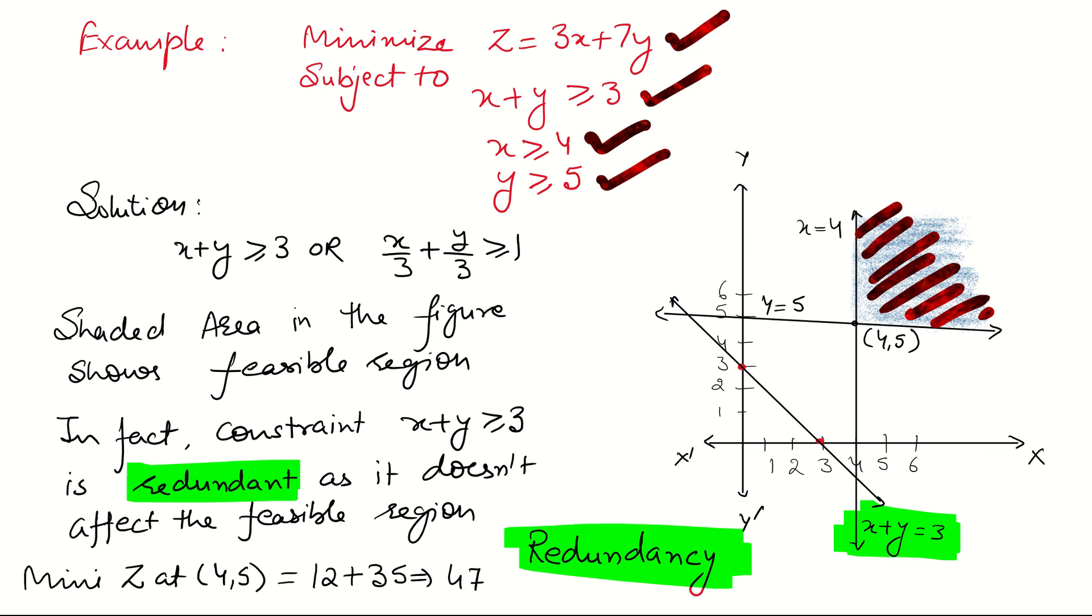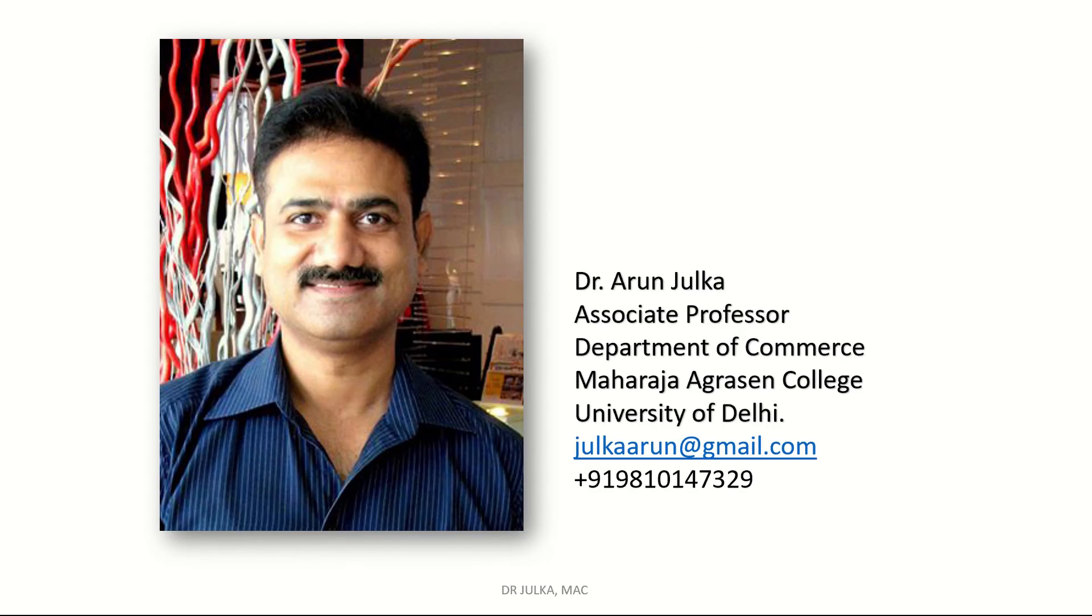But we can calculate the minimum value of z at (4,5). If we calculate the minimum value of z at (4,5), it is 47. But still, this constraint is redundant. Today, we have discussed multiple optimum solution and where one constraint becomes redundant.